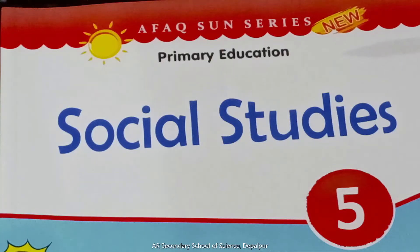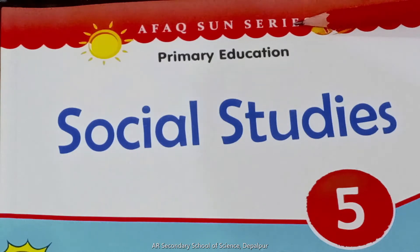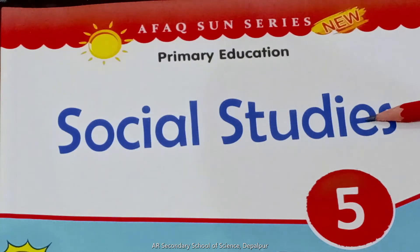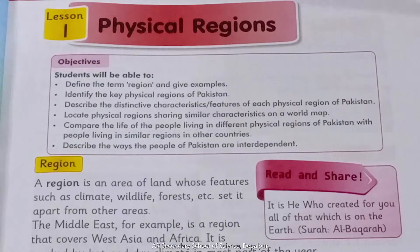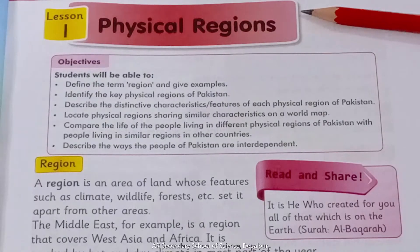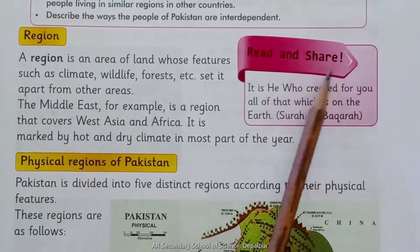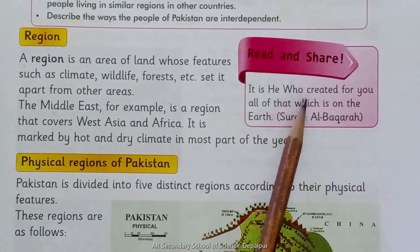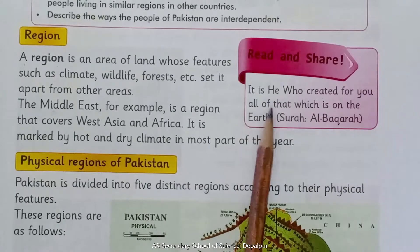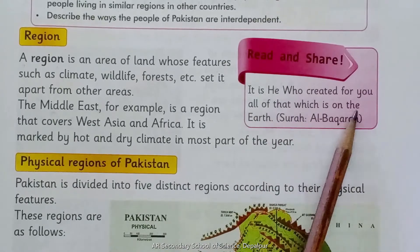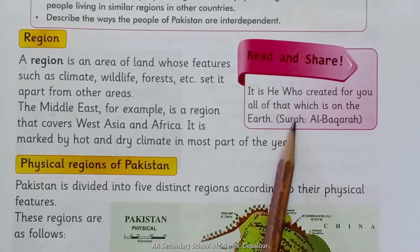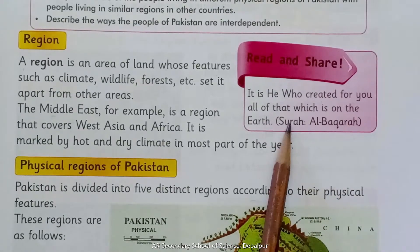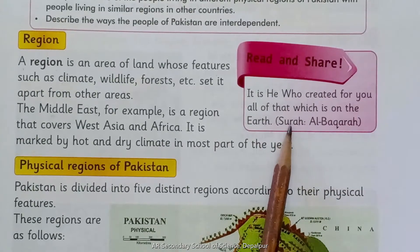Before I move towards my topic, let me introduce the book which is the Fox Sun Series, Social Studies, Grade 5, page number one, lesson number one — Physical Regions. Read and share: 'It is He who created for you all of that which is on the earth.' — Surah Al-Baqara. Yeh wahi hai jis ne paida kiya tumhare liye jo ke zameen par hai.